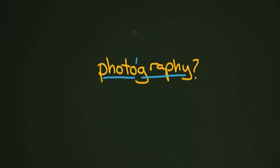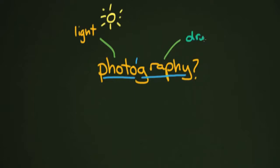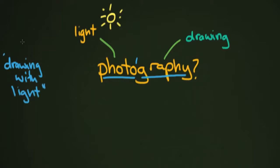So why don't we first take a look at the word itself. You can see there's actually a space here between two words — photo and graphy. If you're familiar with English, you've seen 'graphy' attached to lots of other words. Photo is a Greek word for light — not in the sense of heavy or light, but light like the sun, what you see with your eye. And graphy means something along the lines of drawing. So when you put those two together, you come up with drawing with light.